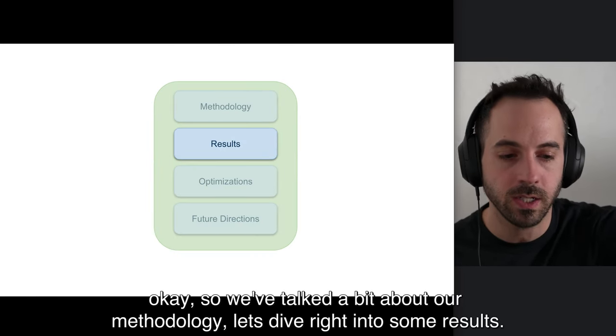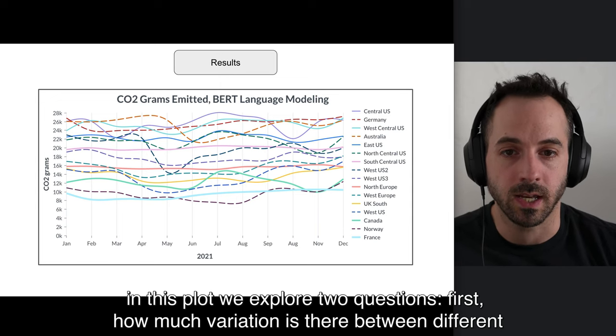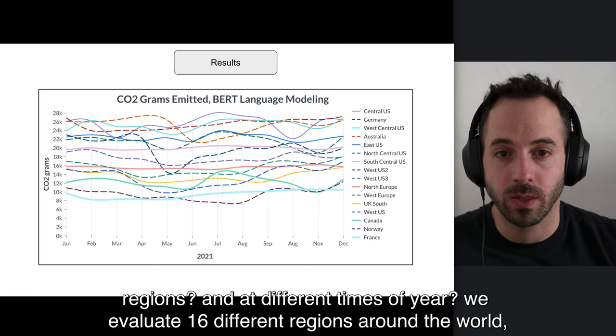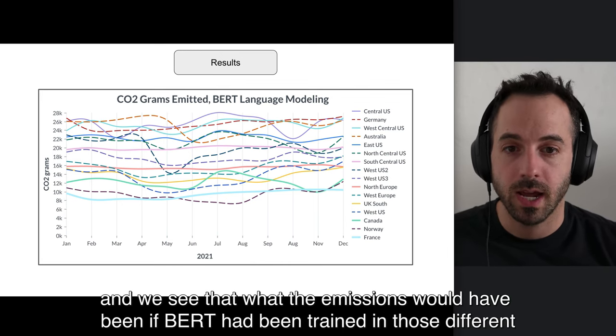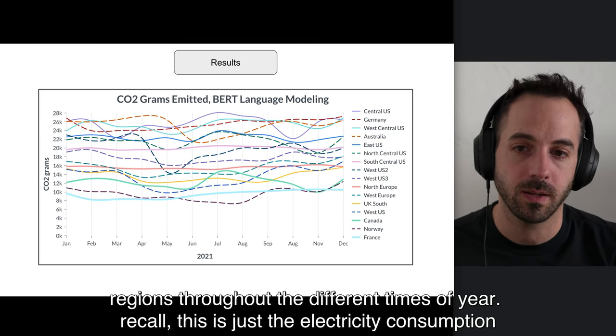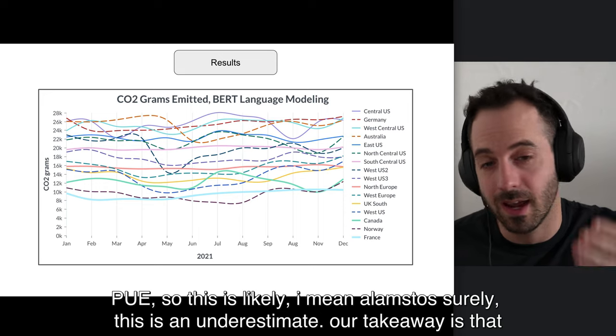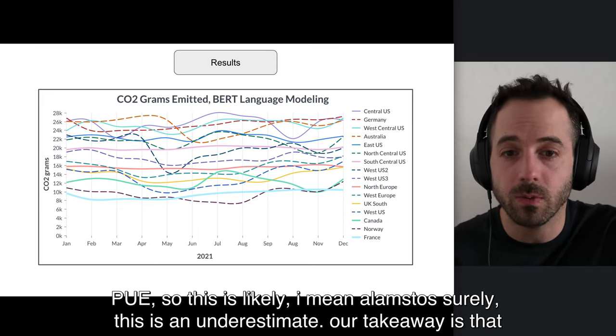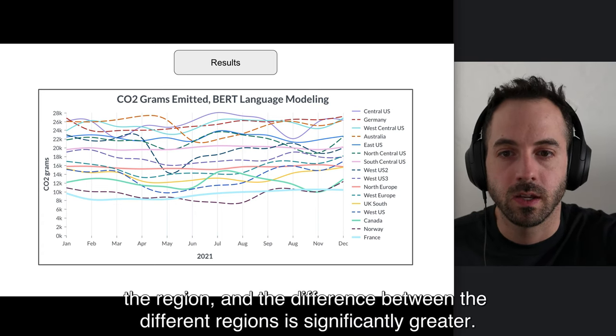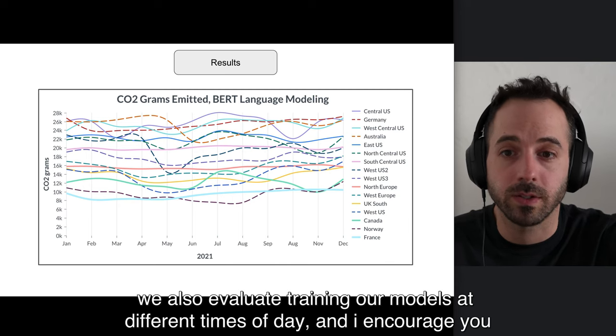So we've talked a bit about our methodology. Let's dive right into some results. In this plot, we explore two questions. First, how much variation is there between different regions and at different times of year? We evaluate 16 different regions around the world, and we see what the emissions would have been if BERT had been trained in those different regions throughout the different times of year. Recall, this is just electricity consumption from the GPU, and it doesn't account for things like data center cooling or other components of PUE. So this is an underestimate. Our takeaway is that the region matters a lot. The time of year does see some variation, but it really depends on the region and the difference between the different regions is significantly greater.